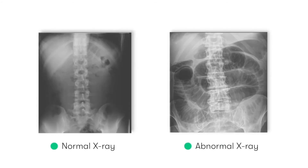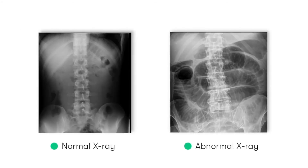Here you can see a normal x-ray on the left hand side and an abnormal x-ray showing small bowel dilatation on the right hand side, and we should be able to instantly appreciate that there's a significant difference between the two images.